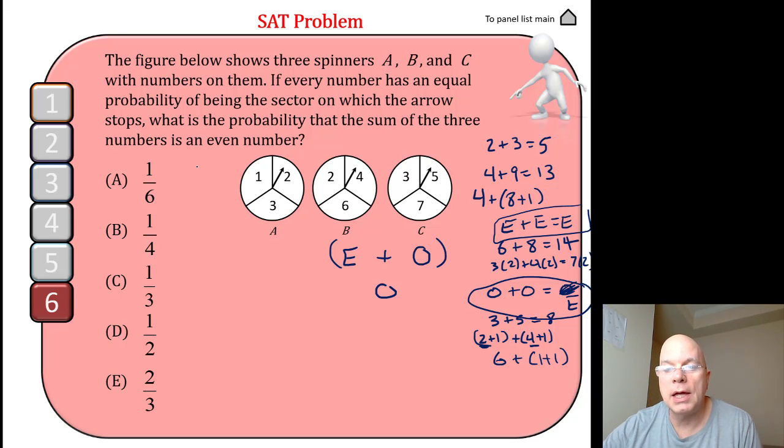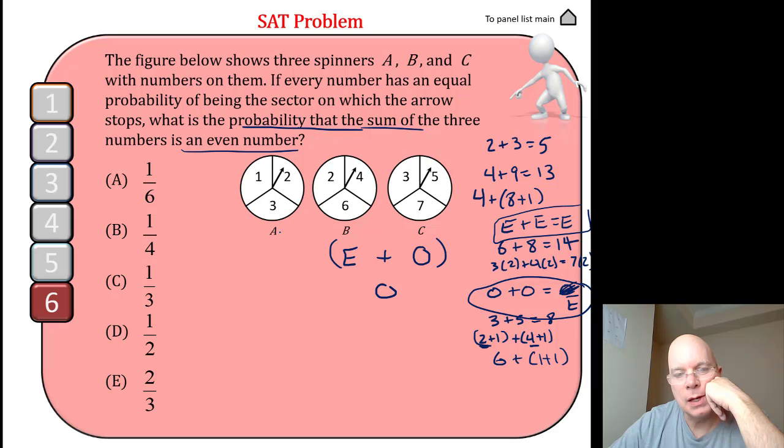Unfortunately spinner A could be even or odd. Although the question is asking us the probability that the sum will be even, well what would I have to get on A to add to the odd?